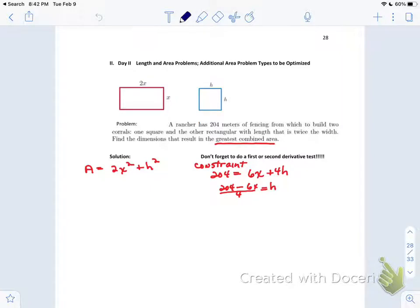So it's going to be that 204 minus 6x divided by 4 equals h. So I can make that a little simpler. So h equals 51 minus 3 halves times x. That's my h substitution.